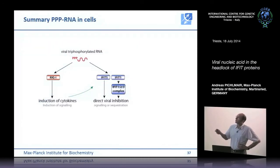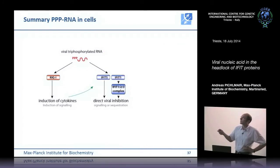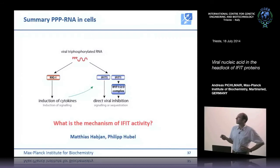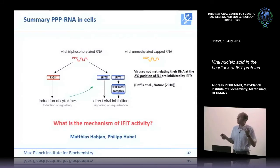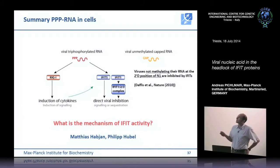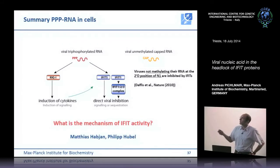We now know roughly how PPP RNA binds to IFIT5, and we have models of IFIT1 suggesting a similar binding mechanism. A key question is what the mechanism of IFIT antiviral activity is. A few years ago, a paper by Michael Diamond's lab — I think groundbreaking in this field — showed that viruses that do not methylate their RNA at the 2' O position of the first nucleotide are inhibited by IFIT proteins. We thought this could be a tool to study the IFIT complex in more detail.